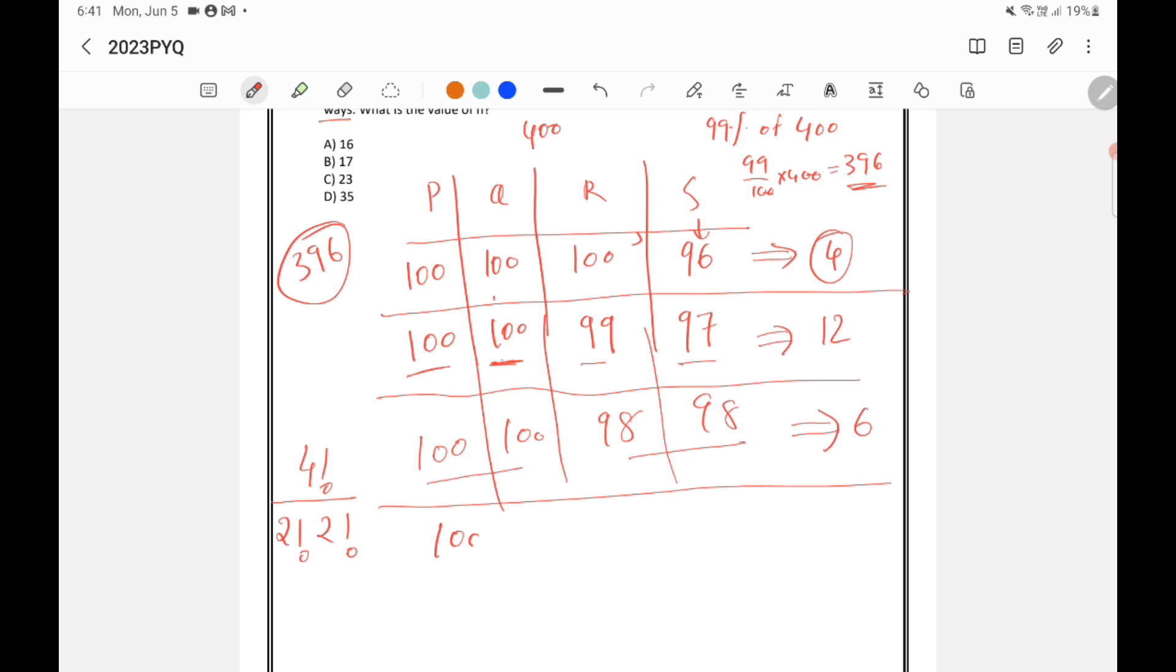Similarly, there is another possibility, 100, 99, 99, 98. So this is also possible. So if you do, similarly, it will come also 12 because 99 is coming 2 times.